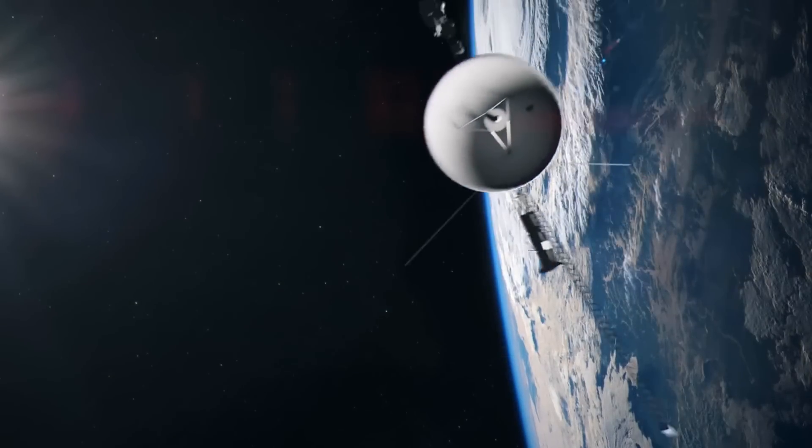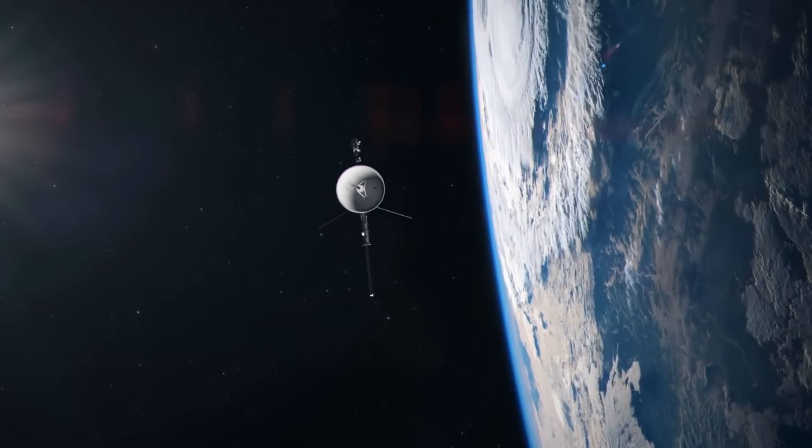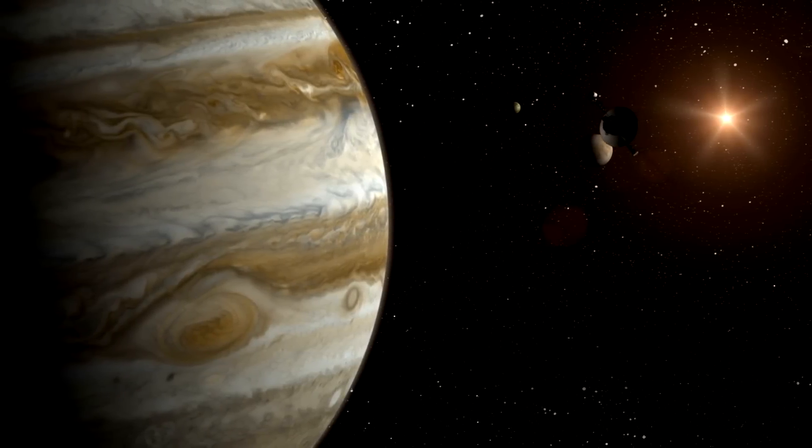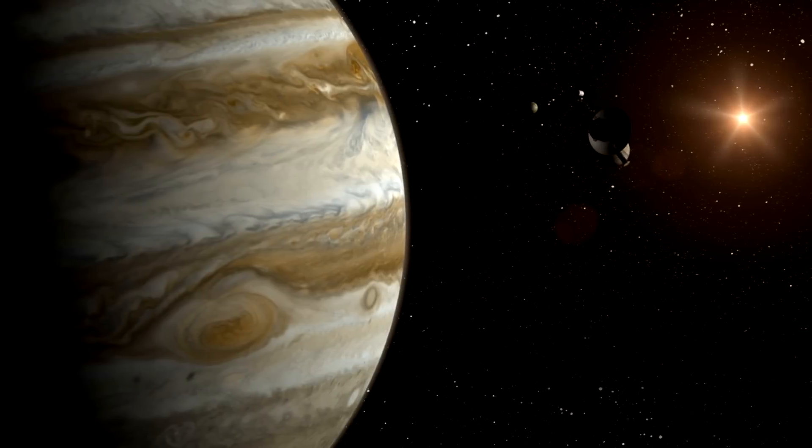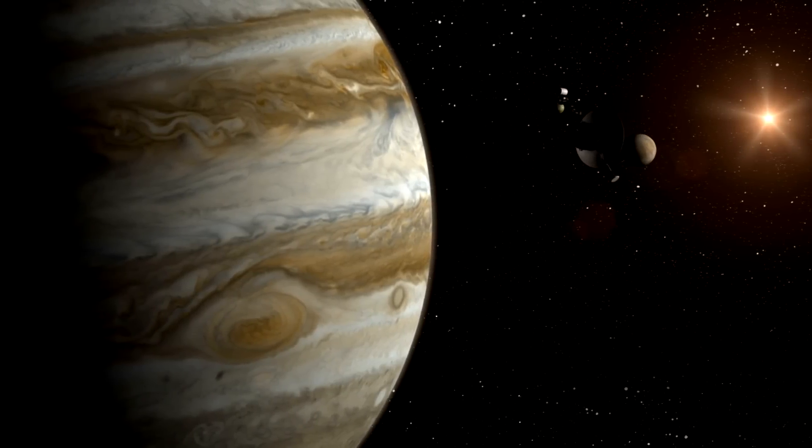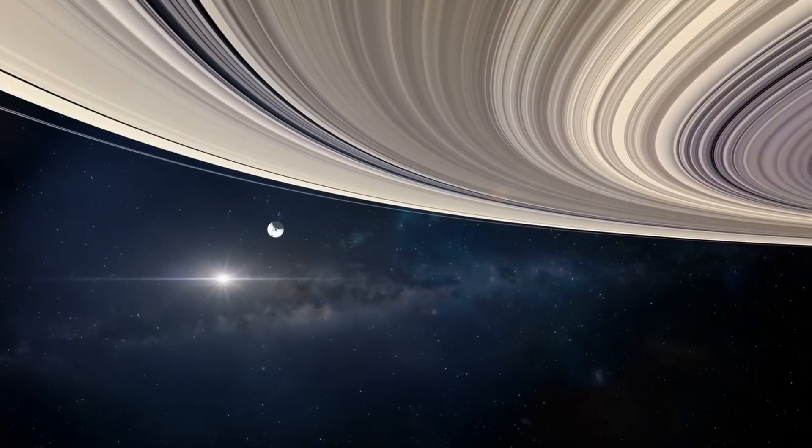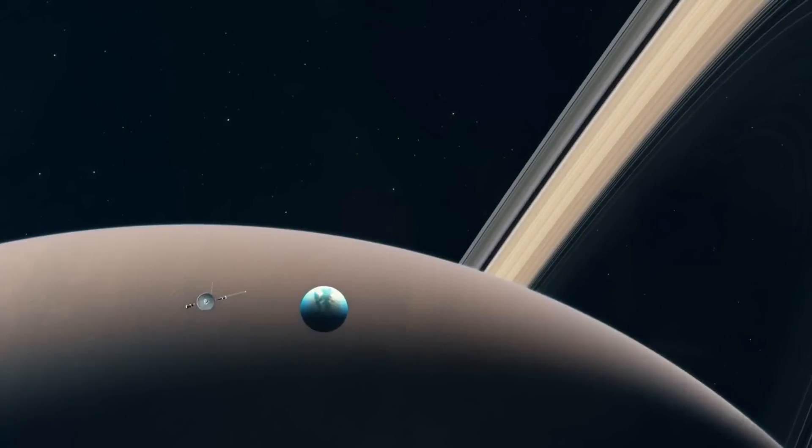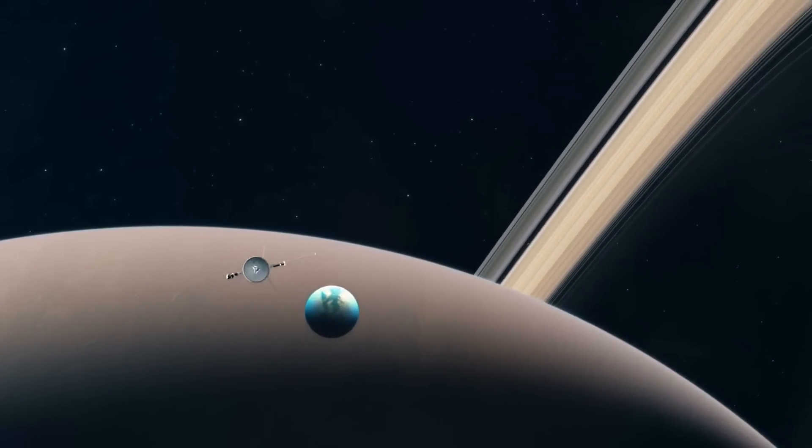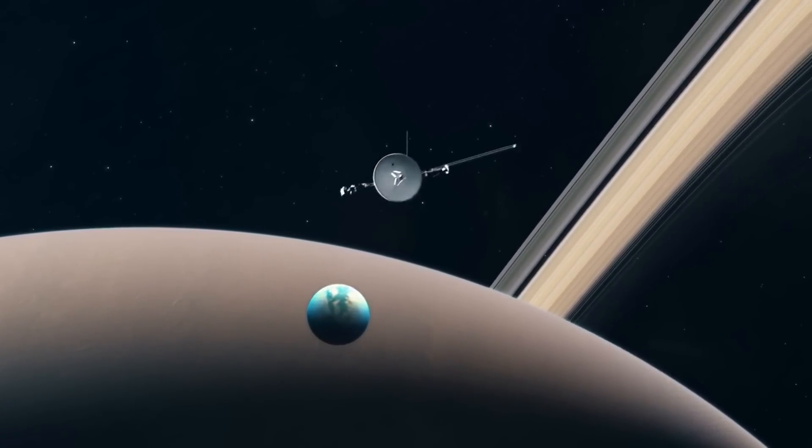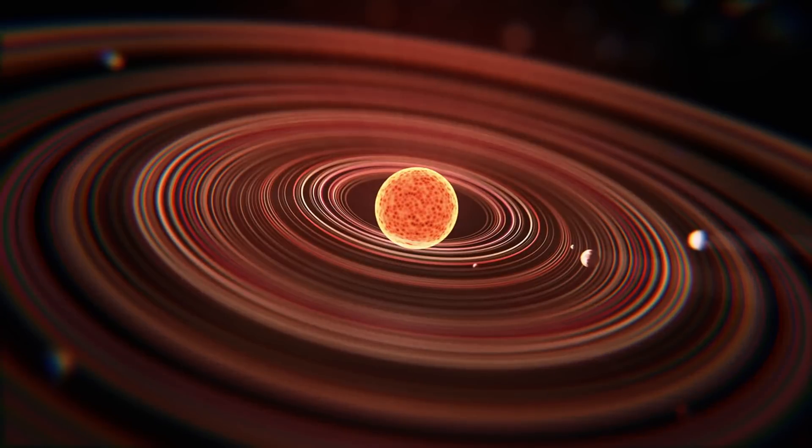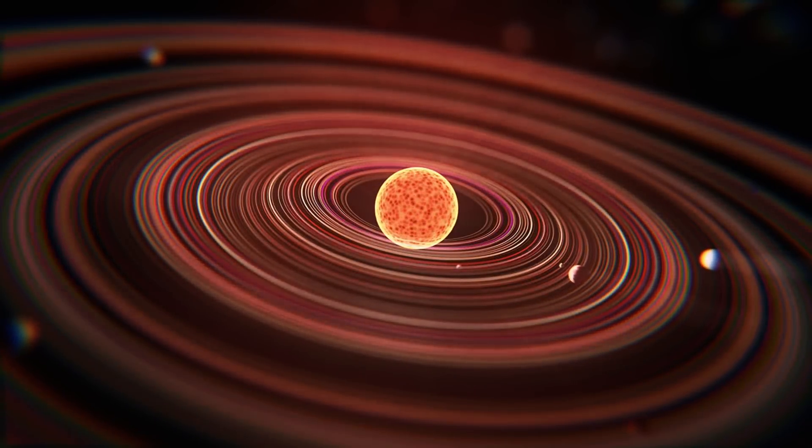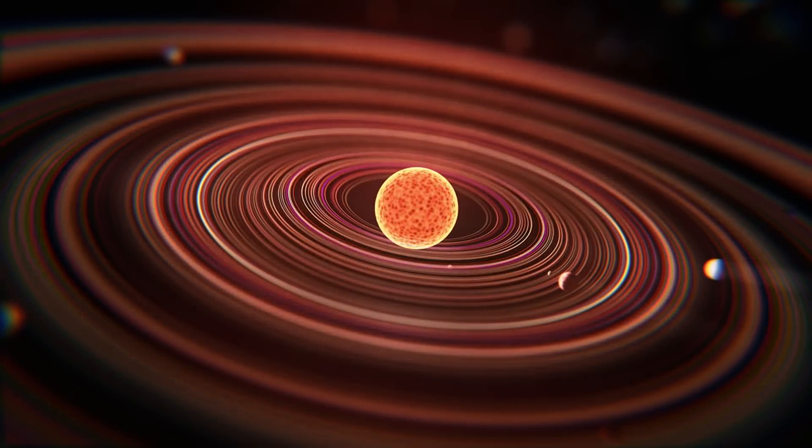After completing its primary mission, Voyager 1 was not done. NASA decided to extend its mission, sending it on a path that would eventually take it out of the solar system and into interstellar space. This journey into the unknown began in earnest after Voyager 1's encounter with Saturn. The spacecraft was directed towards the edge of the solar system, a region scientists knew little about. This area, known as the heliopause, is the boundary where the sun's influence ends and the interstellar medium begins.